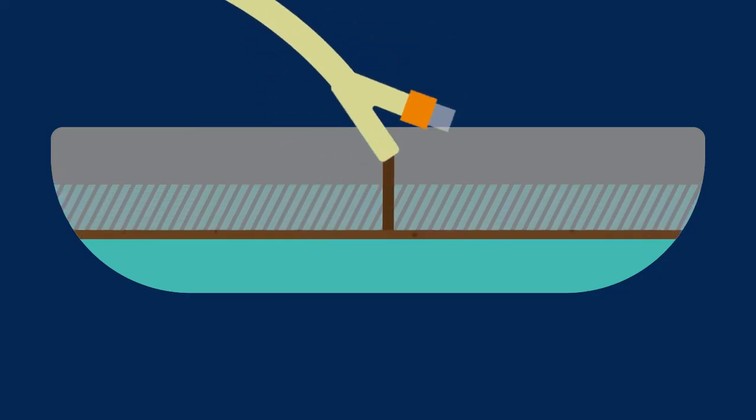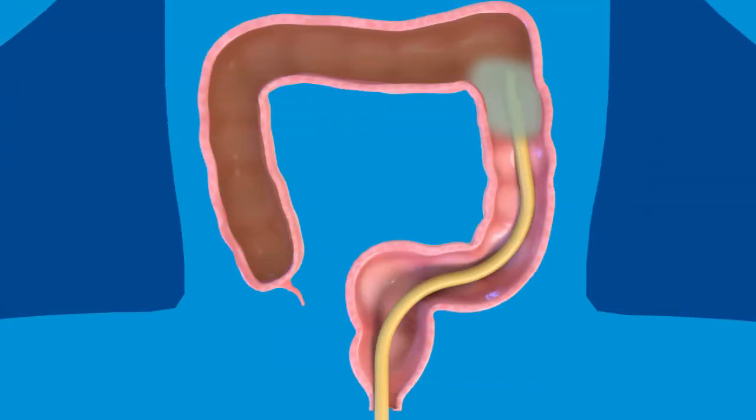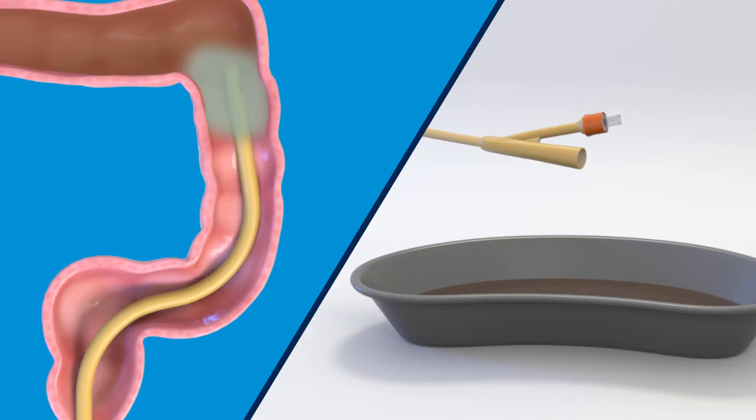If the amount of saline you inject into the rectum is more than the amount of fluid that returns to the basin then there is extra fluid in the rectum. To drain the extra fluid try moving the catheter in and out while twisting.